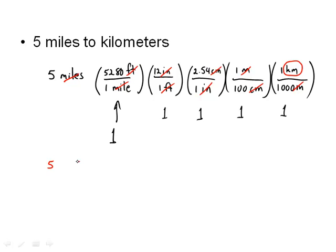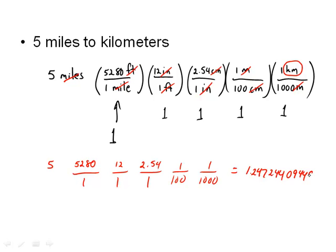Then numerically, I have 5 times 5,280 over 1, 12 over 1, 2.54 over 1, 1 over 100, and 1 over 1,000. And so if I work out all of those multiplications, I'm going to take 5 times 5,280 times 12 times 2.54, and then divide that by 100, and divide that by 1,000. And when I'm all said and done, I end up with 1.247244 kilometers. So 5 miles equals 1 kilometer if I stick with one significant digit.